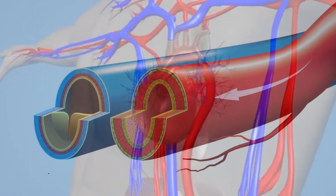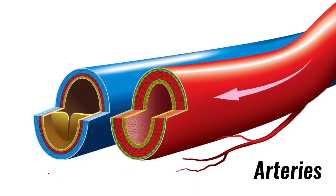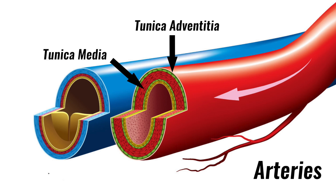The artery walls consist of three layers. The tunica adventitia is the strong outer covering which consists of connective tissues, collagen and elastic fibres. The tunica media is the middle layer and consists of smooth muscle and elastic fibres which enable it to constrict and dilate. The tunica intima is the inner layer which is in direct contact with the blood flowing through the artery. It consists of an elastic membrane and smooth endothelial cells.